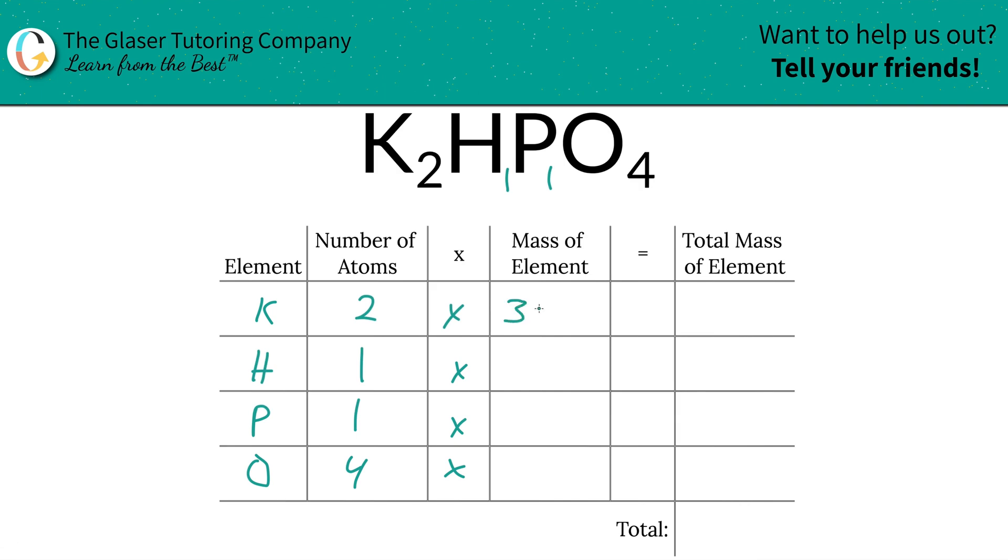We're going to find the total mass of each element in the compound by simply multiplying this row across. The total mass of potassium is 78.20, total mass of hydrogen is 1.01, phosphorus is 30.97, and oxygen you're going to take 4 and multiply it by 16, so that works out to be 64.